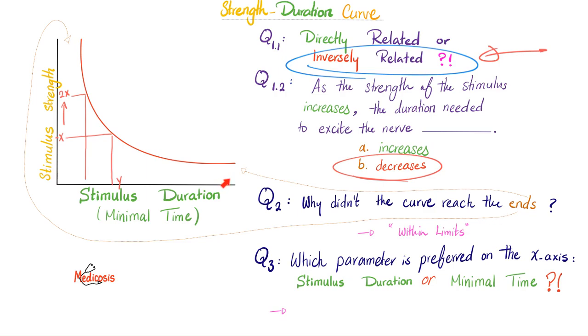Why didn't the curve touch the ends? There is a gap here and here, which means within limits. The strength of the stimulus is inversely related to the duration needed to excite the nerve within limits. When you give a stronger stimulus, you get a shorter time to respond, then even stronger, even shorter, until you hit the critical point beyond which no shortening of duration will happen. Which parameter should we depict on the x-axis? Should we use duration or minimal time? Minimal time is better.